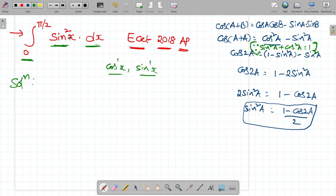Sin square x is equal to a very good relation is there. That is, sin square a is equal to 1 minus cos 2a by 2. So, sin square x is equal to 1 minus cos 2x by 2.